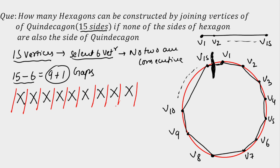If I select 6 of these 10 gaps to place my chosen vertices, I automatically ensure no two selected vertices are consecutive. However, the cases on a circle and on a straight line are different. I think you have this question: I am working on a straight line — how is it the same as the circle? It is not the same. So I need to subtract some cases where I get consecutive vertices that only appear consecutive on the circle.